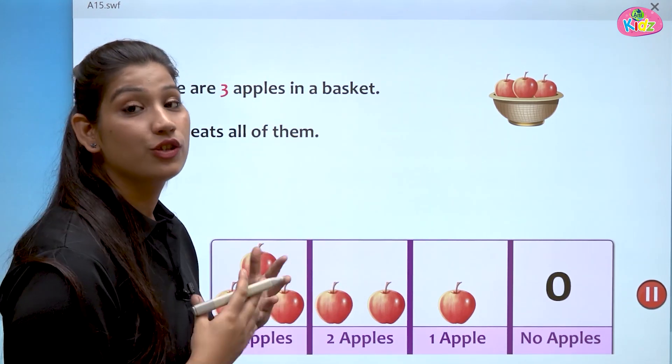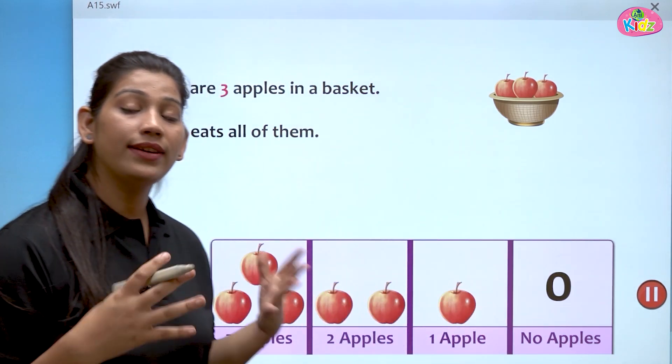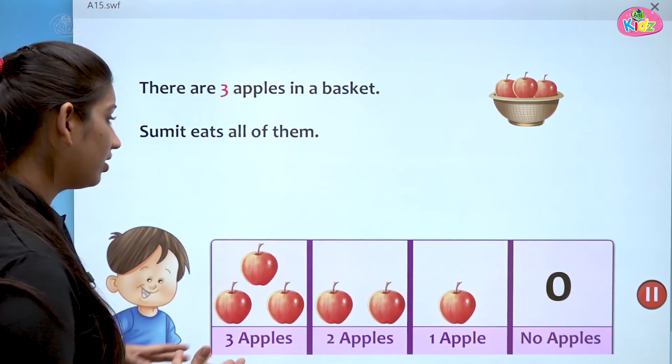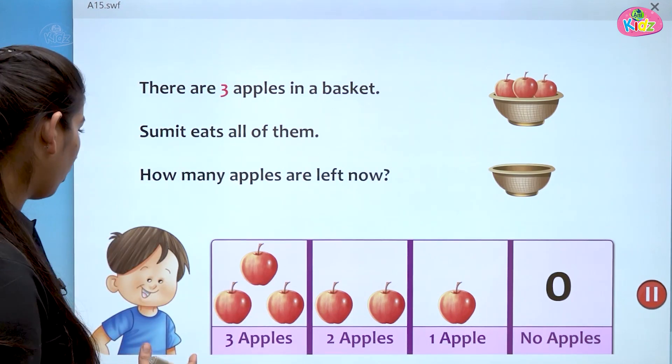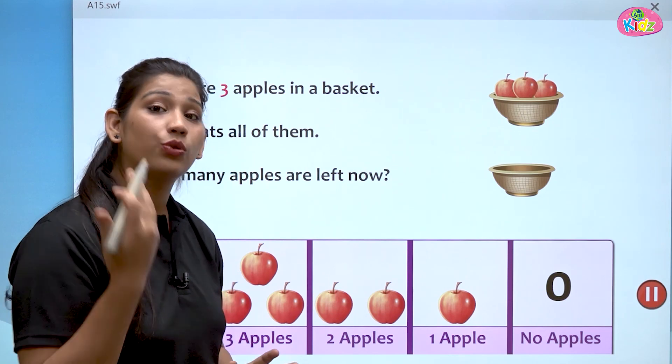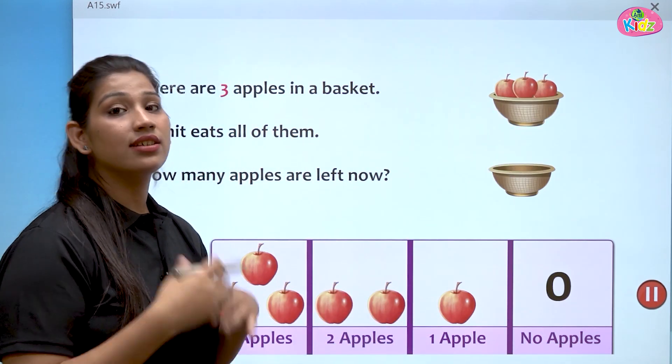Three no apple kha gya. Sumit ne one, two, three, tino apple kha liye. Now, how many apples left in the basket? How many apples are left now? You can see there was a basket which had three apples. One, two, three. But Sumit ate three of them.